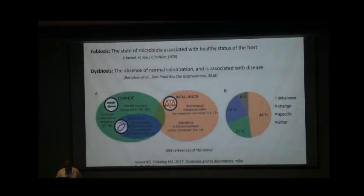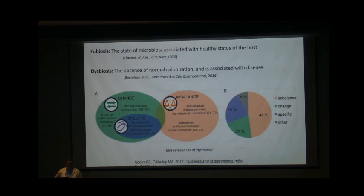Two other terms you'll commonly encounter are eubiosis and dysbiosis. Since there is no clear definition of what 'healthy' is — only 'unhealthy' can be identified with the presence of disease — eubiosis and dysbiosis are defined on a similar scale. Eubiosis is the state of microbiota associated with the healthy status of the host, and dysbiosis is the absence of normal colonization associated with disease.